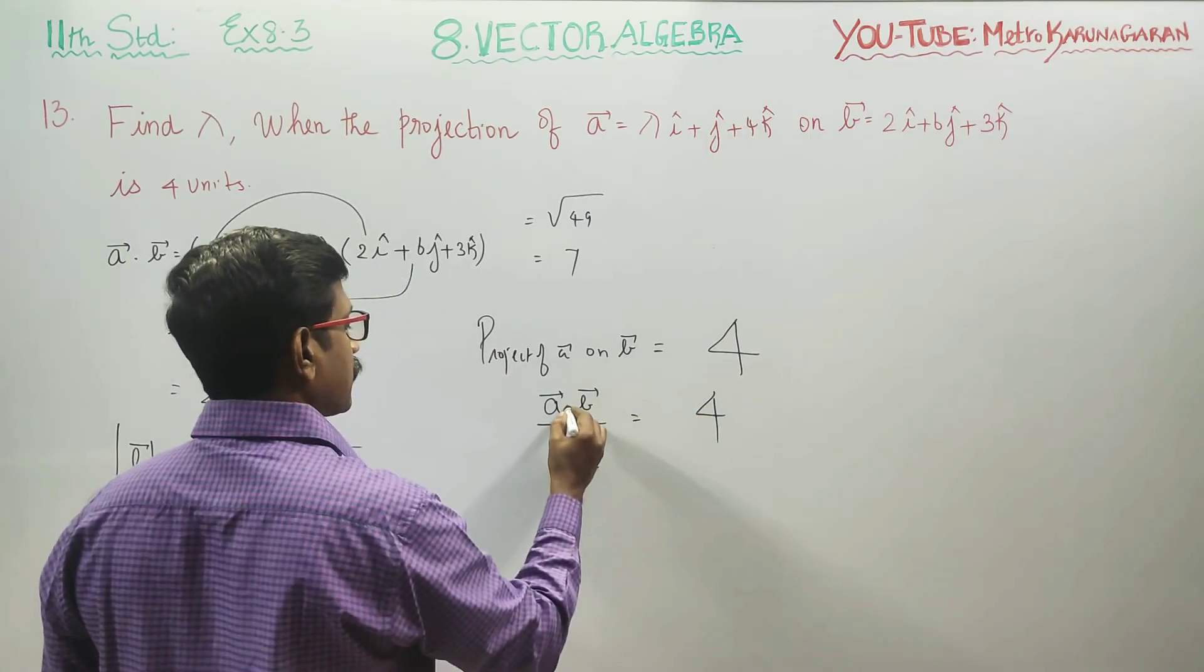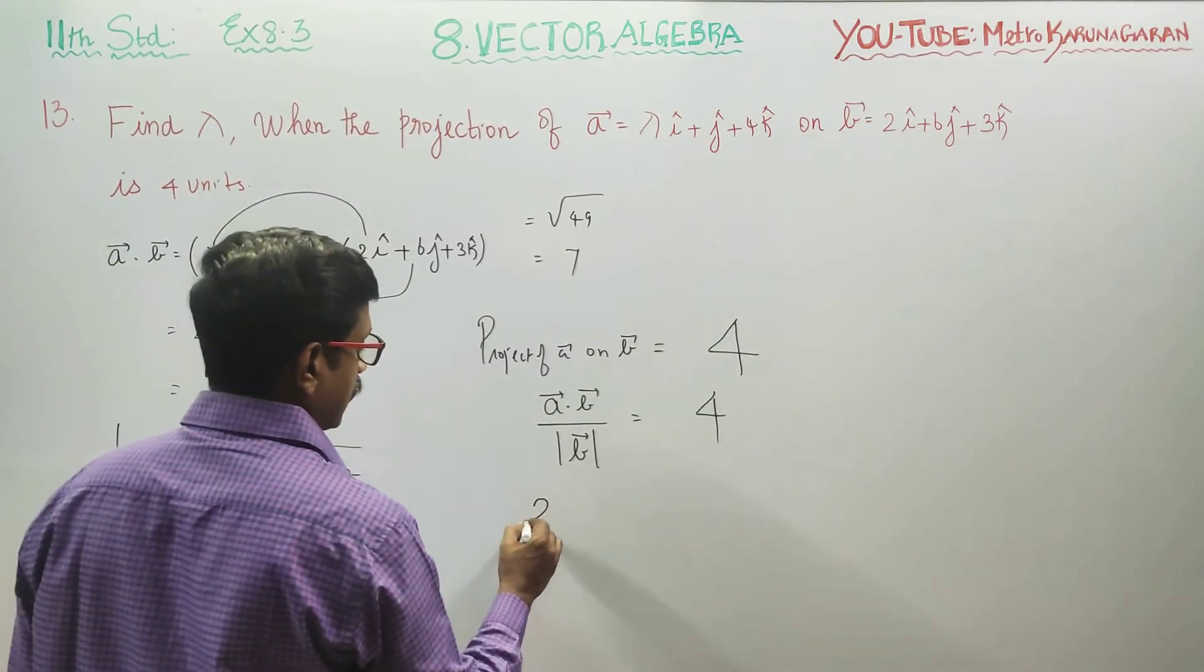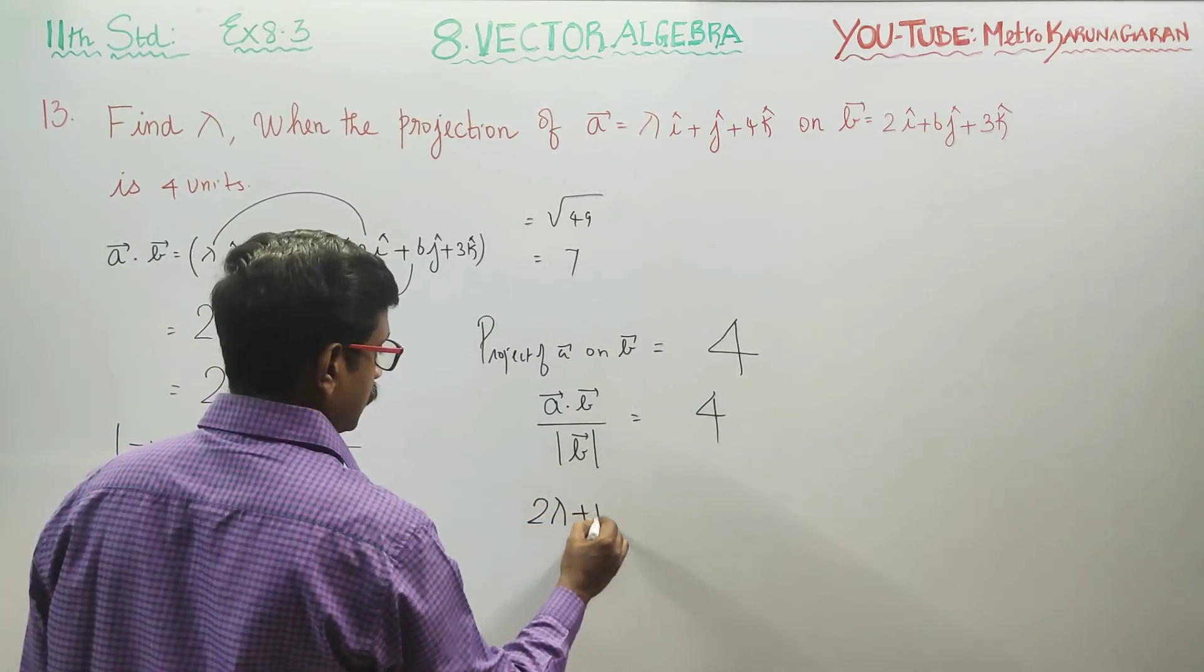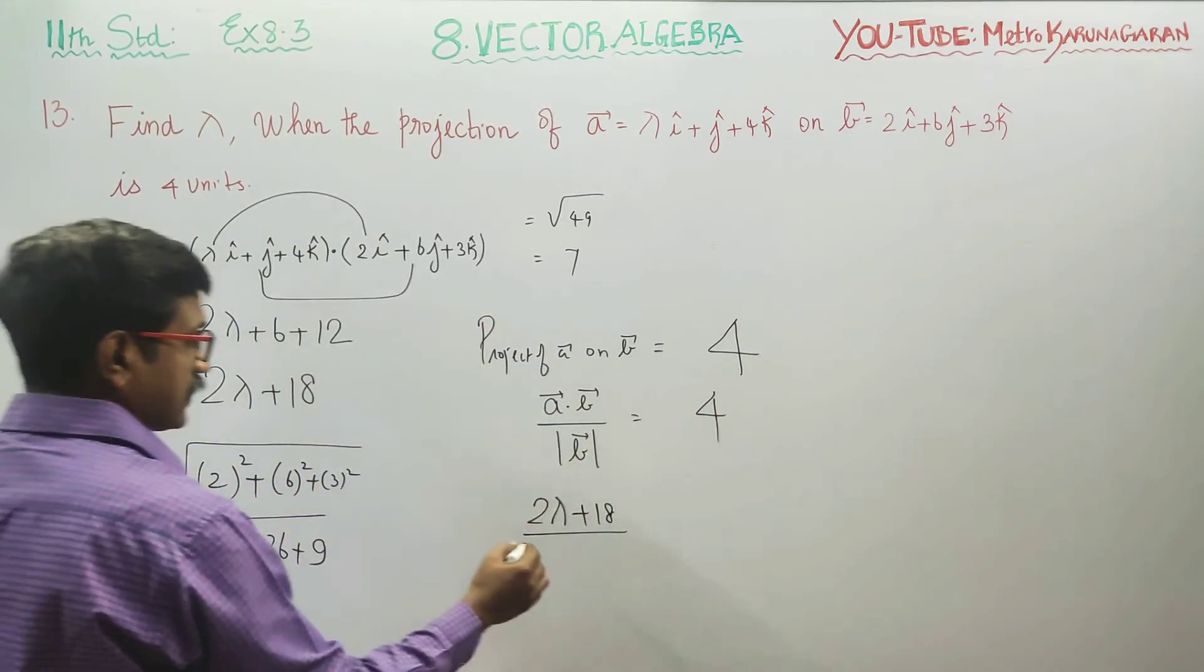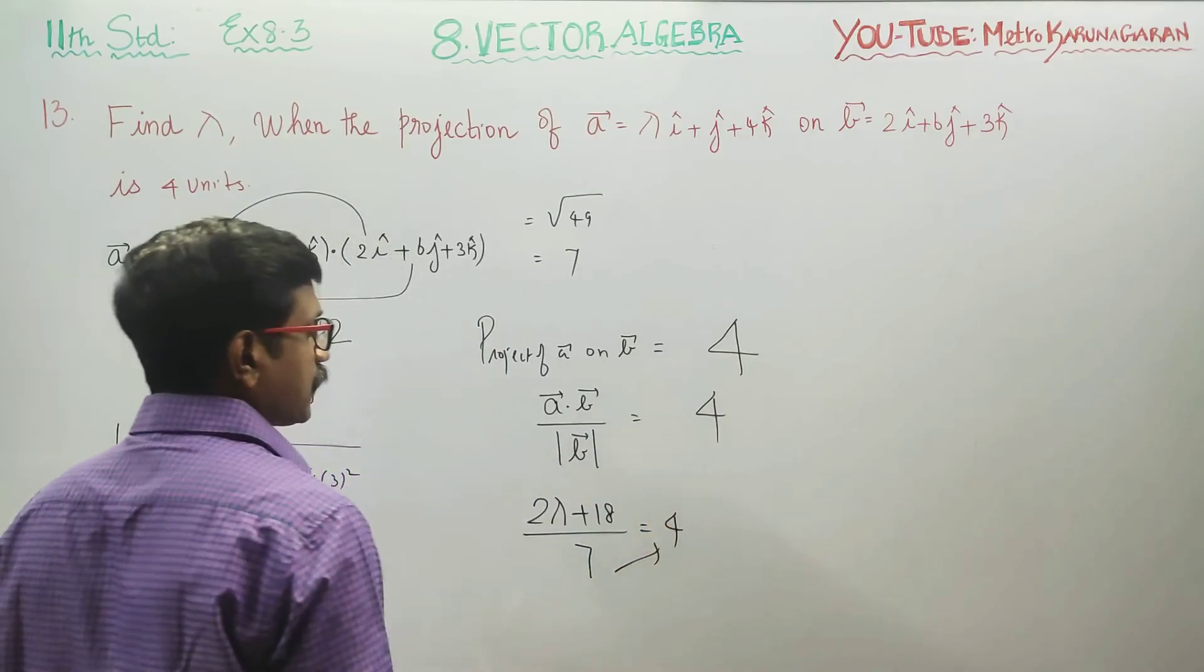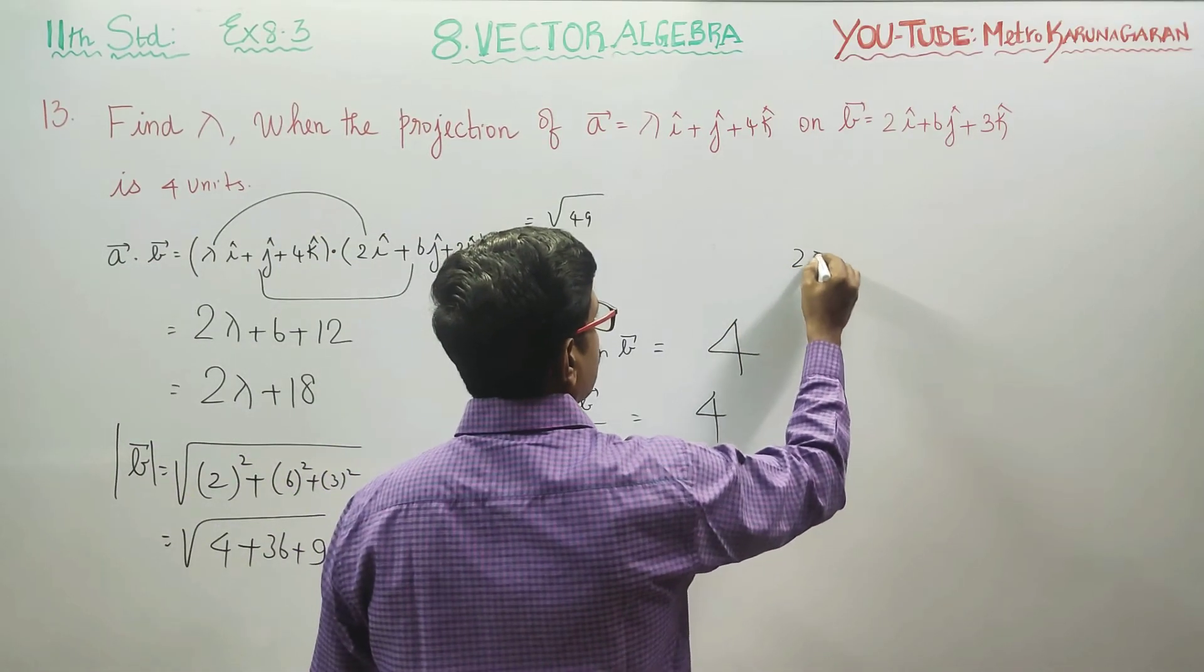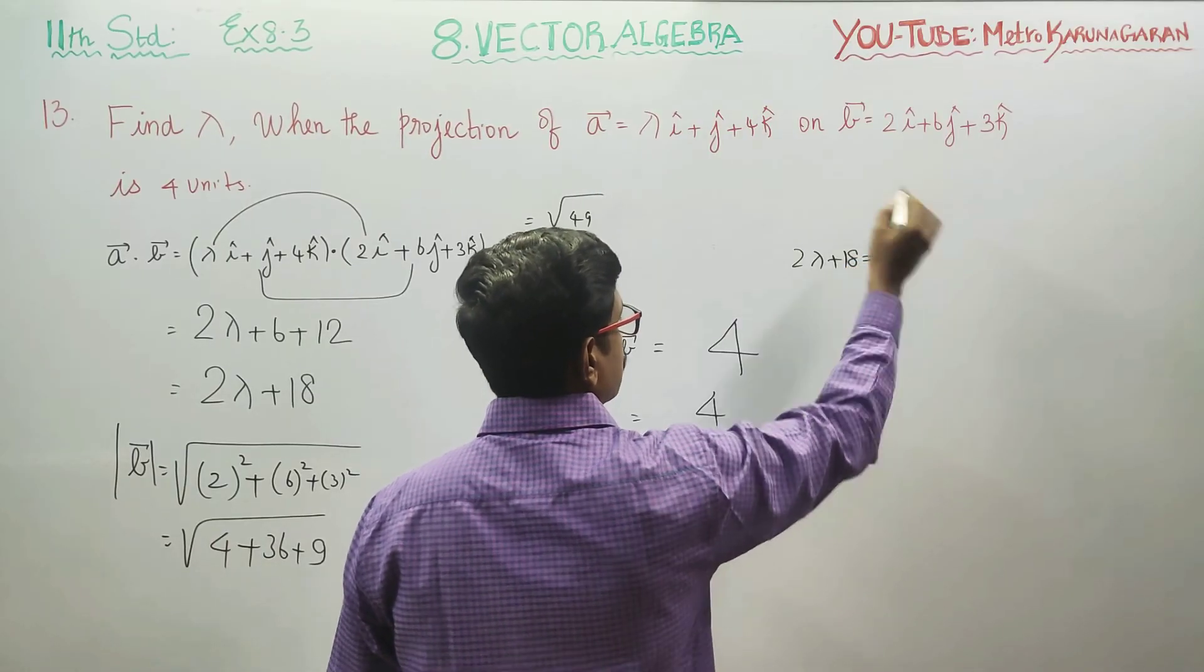A dot B is 2 lambda plus 18. Magnitude of B vector is 7. So 2 lambda plus 18 divided by 7 equals 4. Cross multiply: 2 lambda plus 18 equals 28.